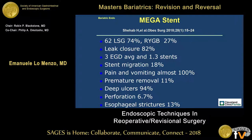One recent experience from Cairo used the Mega Stent on 62 patients, the majority of which were sleeve gastrectomies. Leak closure was achieved in 82% of cases, but it came with a high price: pain and vomiting in nearly 100% of patients, premature removal in 11%, deep ulcers in 94%, esophageal strictures in 13%, and 6% perforation.